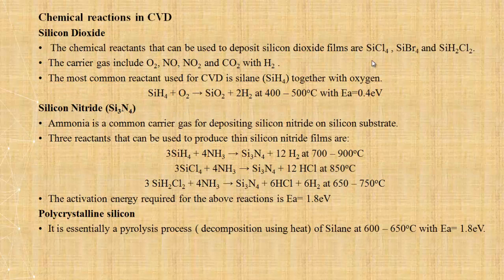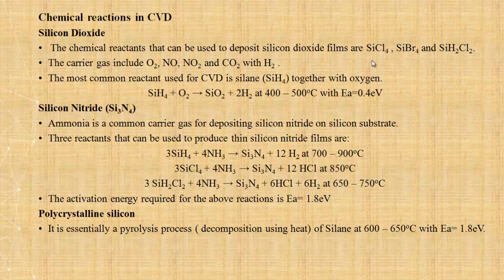Next are the chemical reactions in CVD. In the CVD process, different thin films can be deposited: silicon dioxide layer, silicon nitride layer, and polycrystalline silicon. These use specific chemical reactions and reactant gases.